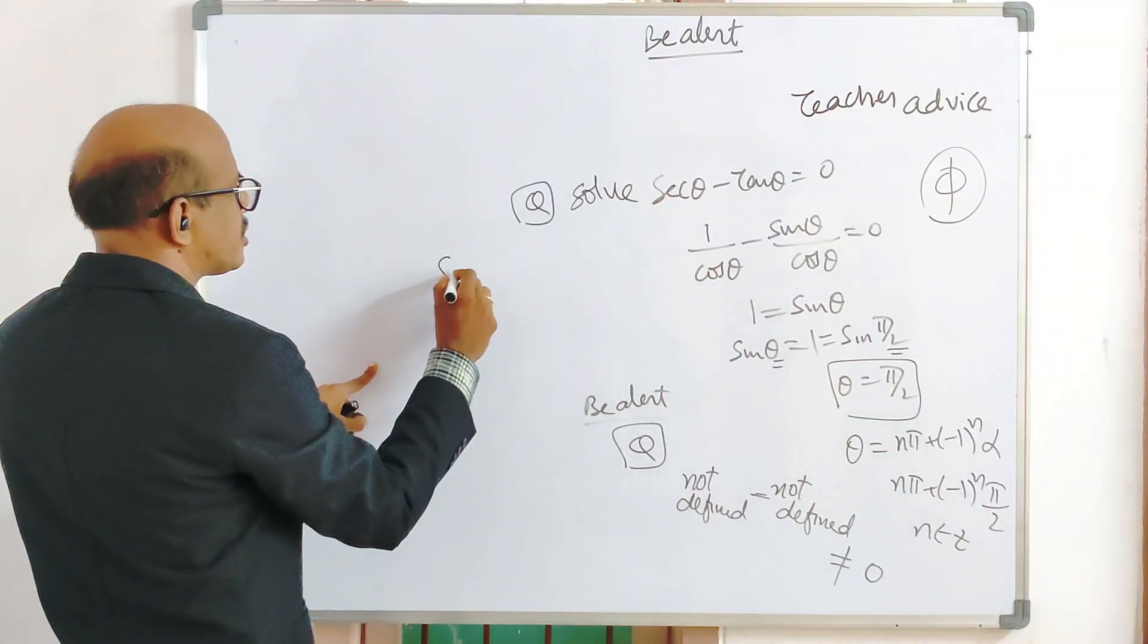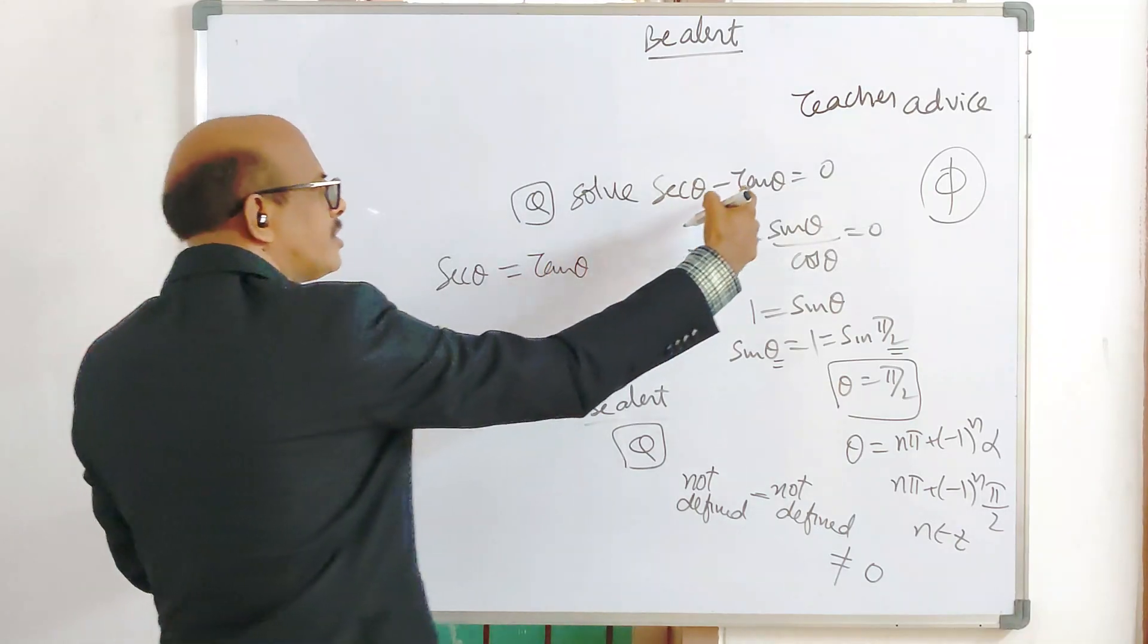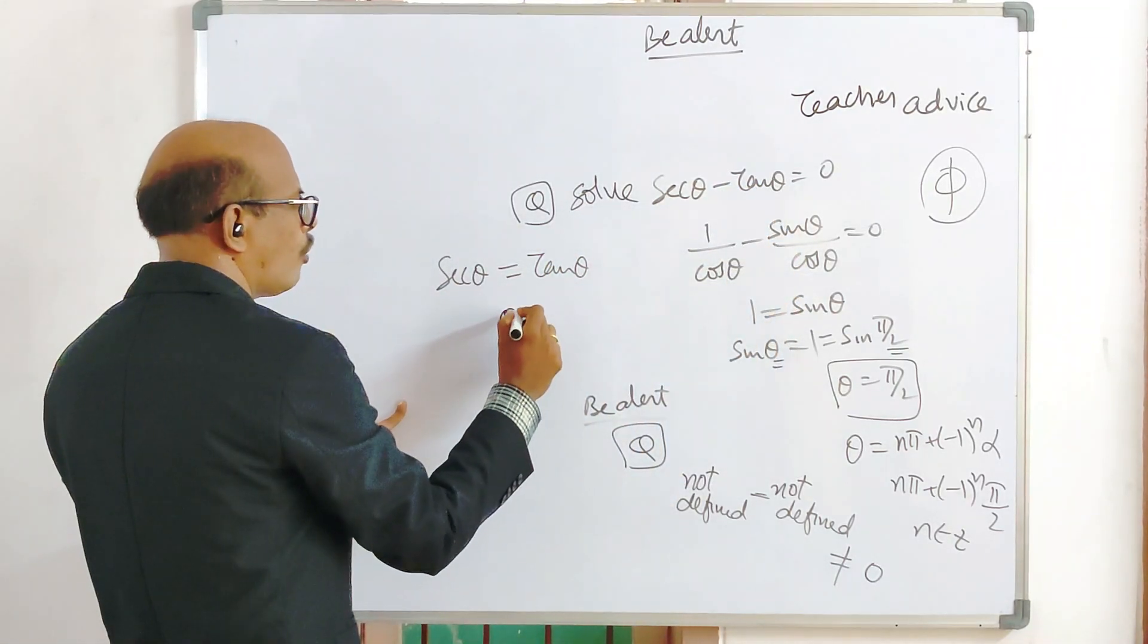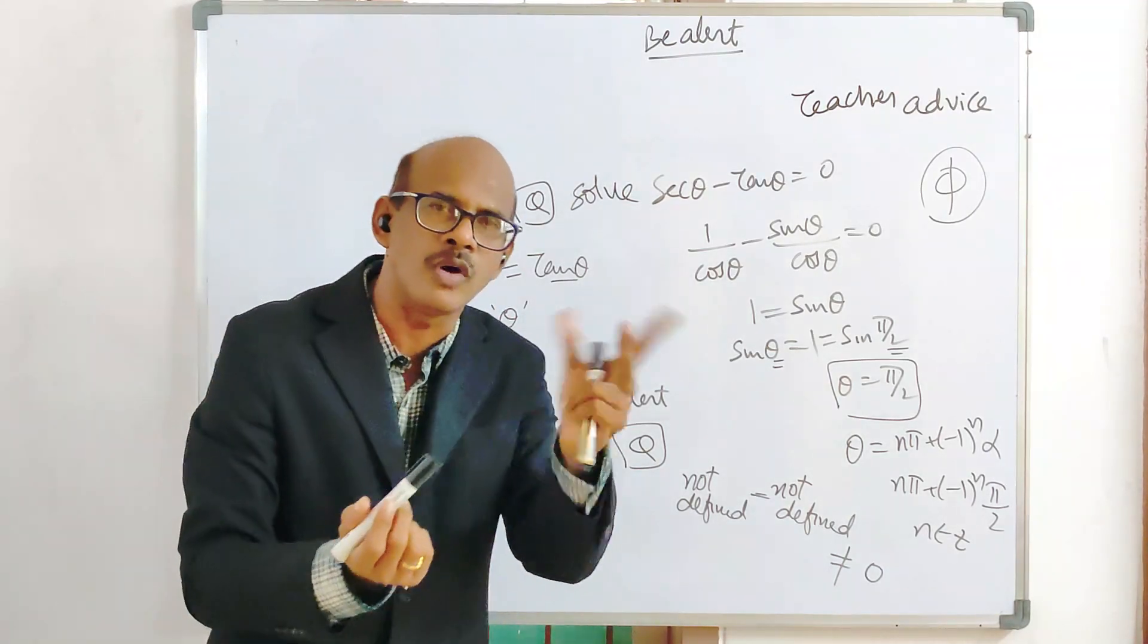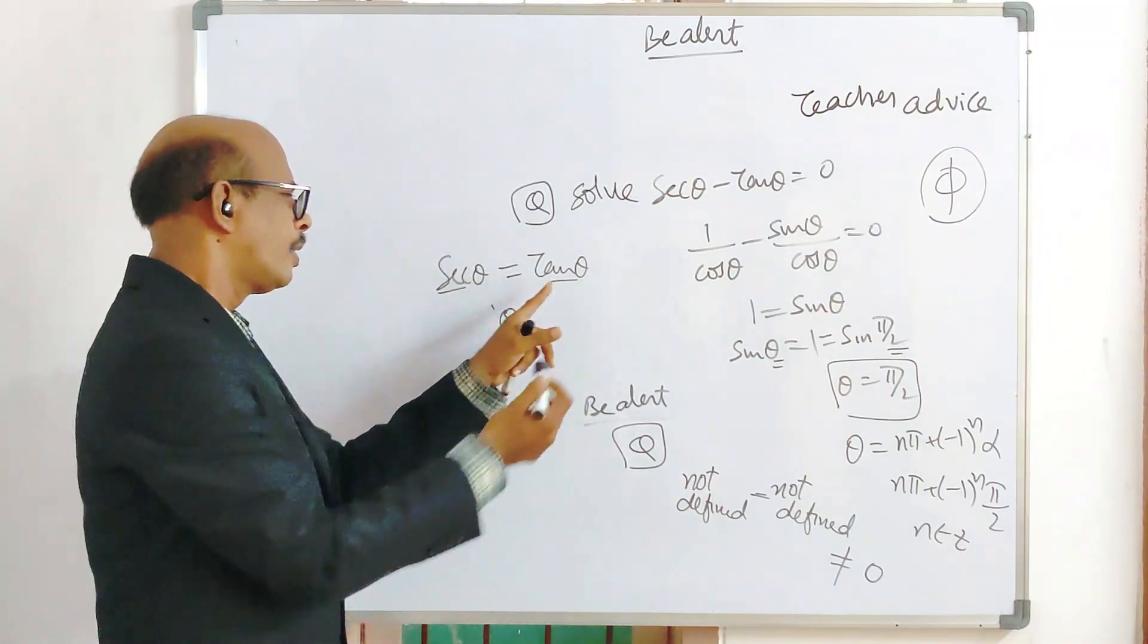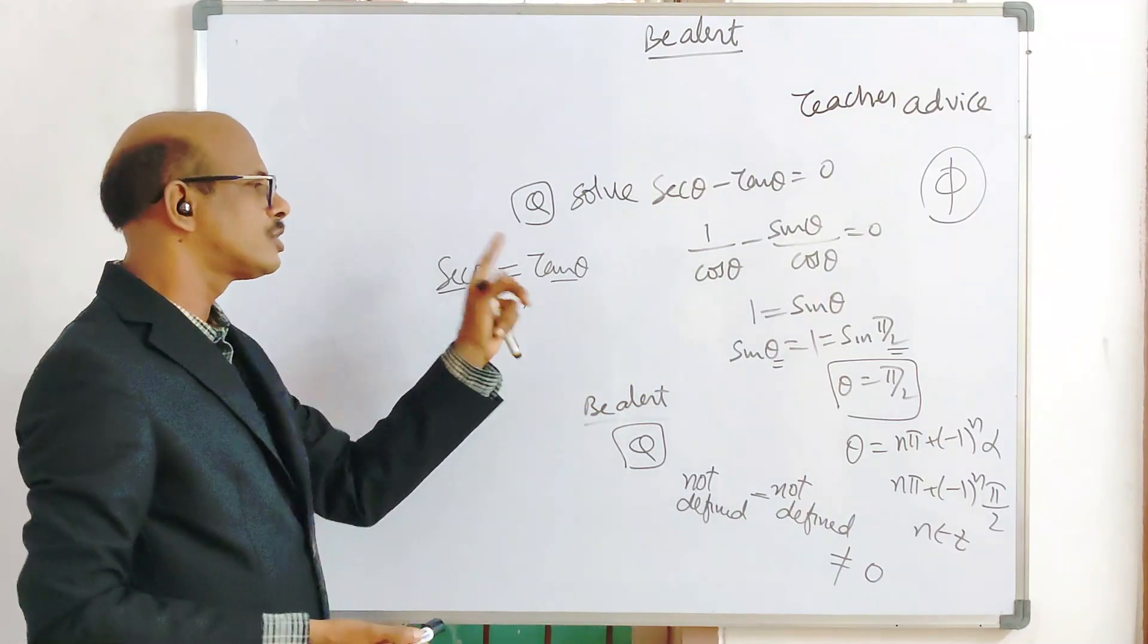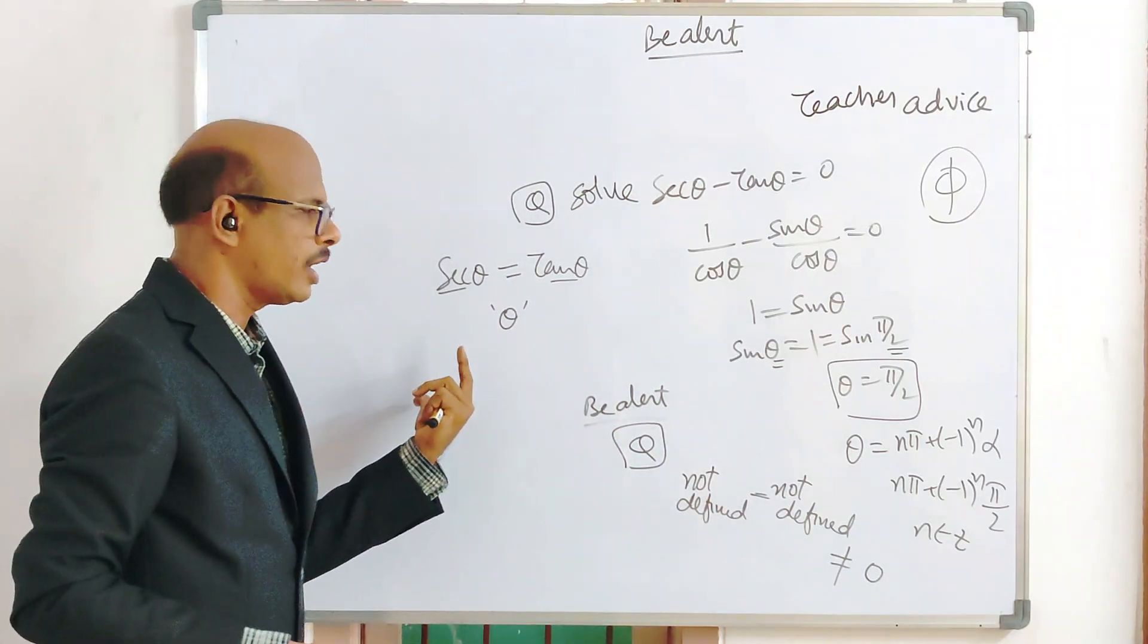Therefore answer, the solution for this is empty set, means no solution. Solution does not exist. There is no value of theta such that satisfied for the equation. Means if I rearrange tan theta that side, it will be sec theta equal to tan theta. No value of theta such that both secant value and tan value never equal. Sec theta and tan theta, sec theta equal to tan theta not possible for the value of same theta, it is not possible. That is one way of explanation.